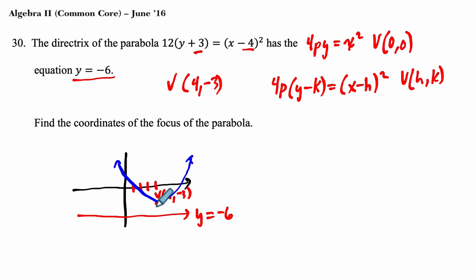So, and the focus will be on the other side of the vertex. How far will it be? Well, whatever distance this is right here, we call this distance the absolute value of p, or I'll just call it p here.